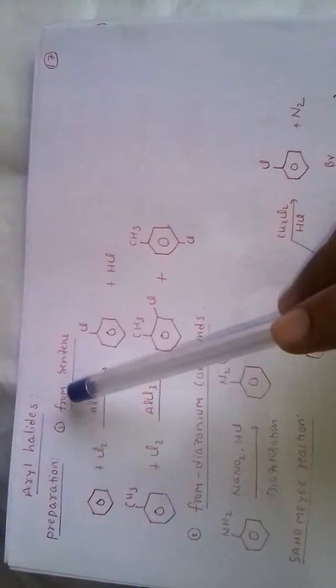Preparation of chlorobenzene. From benzene, benzene reacts with chlorine in presence of AlCl3 to form chlorobenzene.